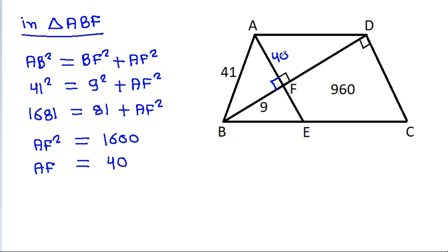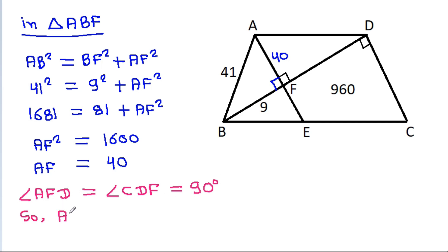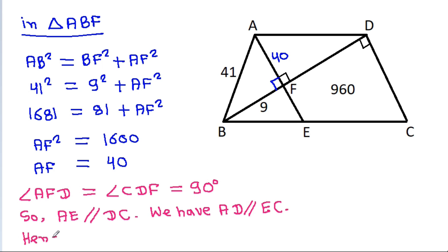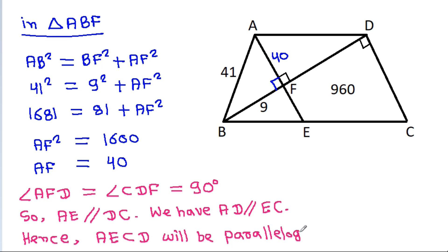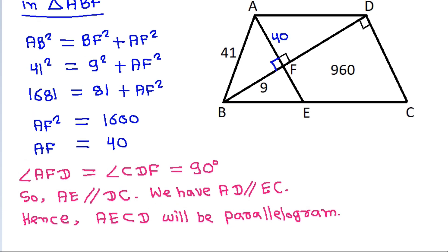AF is 40. And angle AFD is equal to angle CDF, that is 90 degrees. So AE will be parallel to DC. And we have AD parallel to EC. Hence, AECD is a parallelogram, so AD will be equal to EC.